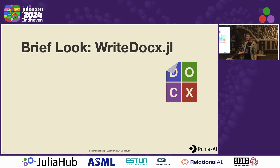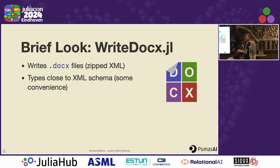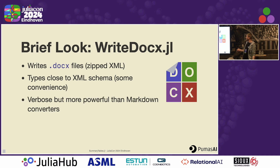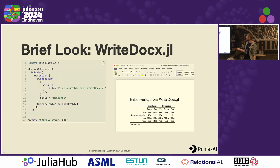Let's take a brief look at the WriteDocx package, which is the other one that we open sourced. It writes docx files, which are like zipped XML files in the back. It has types that are very close to the original schema that Microsoft has published for this, but there's some convenience sprinkled in to make it a little more Julian. You can do basically anything that the schema allows you to do. It's verbose, but more powerful than going through a converter. You can't currently read into Julia data structures, because there are so many tags that I didn't have the time to make the Julia structures for all of them. Here I'm actually pasting one of those tables in — I haven't seen Word tables look like that before, because I think you cannot manually do this in Word, but if you do it programmatically you can, like with this gap here.